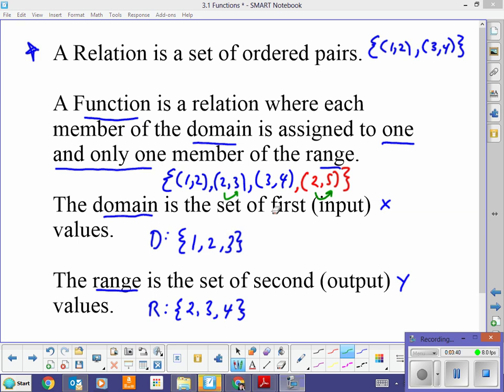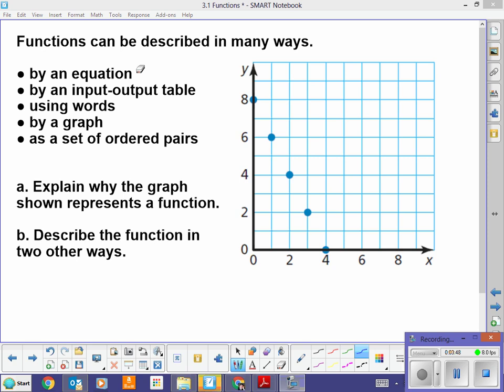Let's move on. Get all this in your notes. I know it's kind of a lot, but we have those ideas. We want to make sure we get those ideas in our head. Functions can be described in many ways by an equation, input-output table, words, graph, set of ordered pairs. We've already looked at ordered pairs, but let's take a look at this thing here. This is a graph, obviously, but why is this a function? How does this graph show us a function? Well, each of these points is what? Each of these points is an ordered pair. So, 0, 8, 1, 6, 2, 4, 5, 2, and 4, 0.